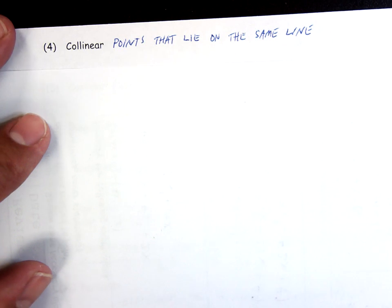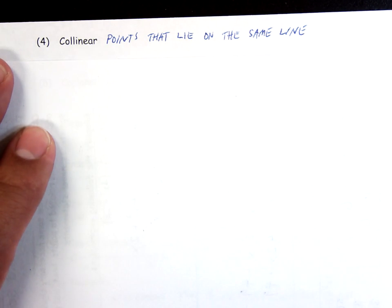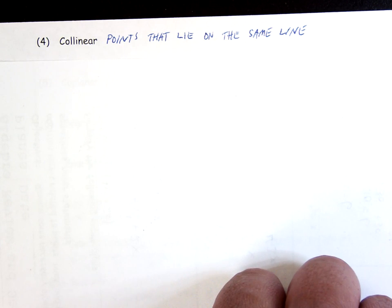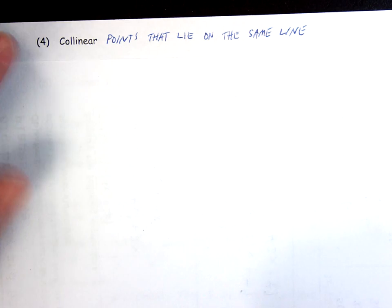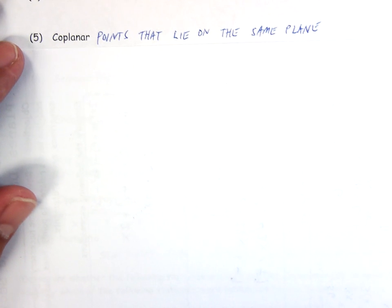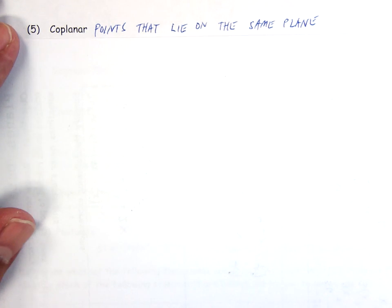Collinear. What does it mean to be collinear? They are points that lie on the same line. So it's just a fancy way of saying I have points that lie on the same line. So if points A, B, and C are all collinear, they all lie on the same line. Coplanar just means that I have points that lie on the same plane. If I have points A, B, C, D, and E, if they are all coplanar, they all lie on the same plane.